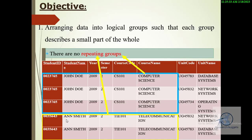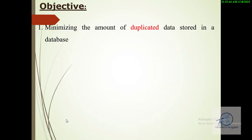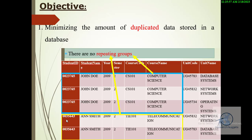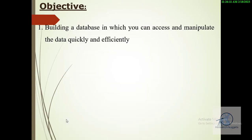As opposed to when you have the data as a whole in this given case. Objective number two is that a normalized database should minimize the amount of duplicated or repeated data. If you look at that, you are going to see that the highlighted sections show repeated data for John Doe in terms of the year, the course, as well as the semester.